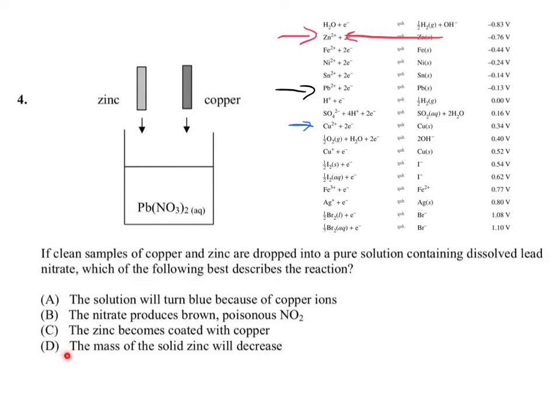The mass of the solid zinc will decrease - yes it will, because it is turning into zinc ions. The lead ions are turning into solid lead. So D is the correct answer for this particular question.